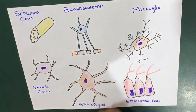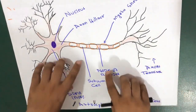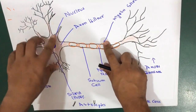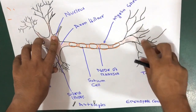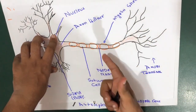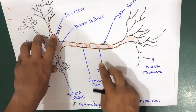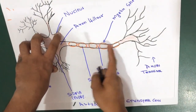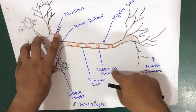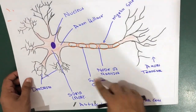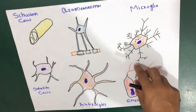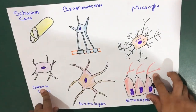Looking at this diagram, you can see the axon and the soma with dendrites. The axon is surrounded by the Schwann cell, which protects it, and between the Schwann cells we have the node of Ranvier. The previous video covers the node of Ranvier in detail — check that out for more information.